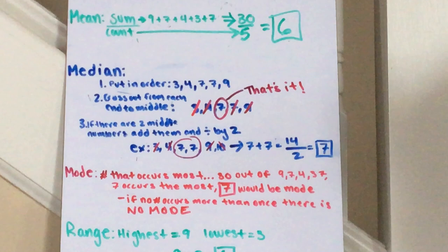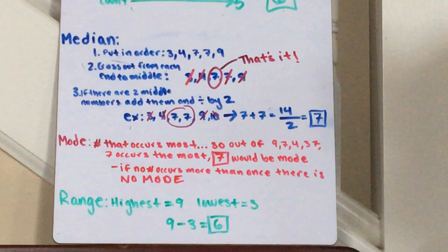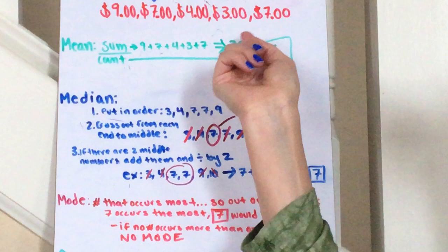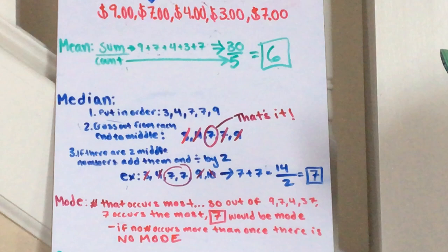Median. Do you remember what I said you have to do with the median? You have to put them in numerical order. So don't leave them as 9, 7, 4, 3, 7. That is not numerical. You want to put them in numerical: 3, 4, 7, 7, 9.